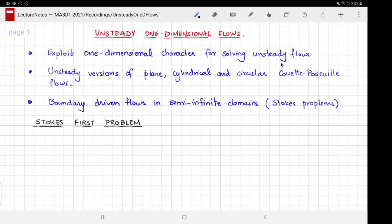Unsteady flows are ones which in an Eulerian description have an explicit dependence on time, so the time derivative cannot be ignored. For all the problems we considered for steady one-dimensional flow, such as plane, cylindrical, or circular Couette-Poiseuille type flows, an unsteady version is also possible and can be solved with standard techniques.